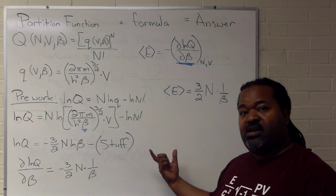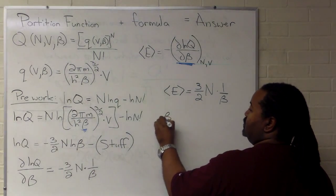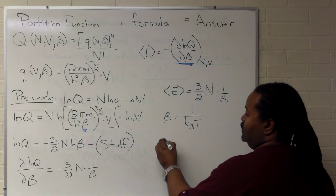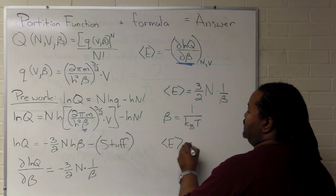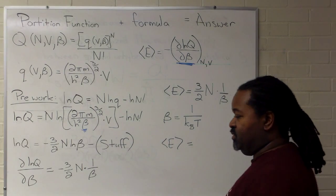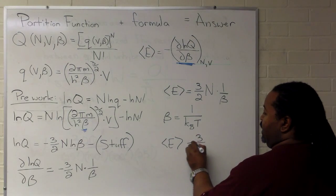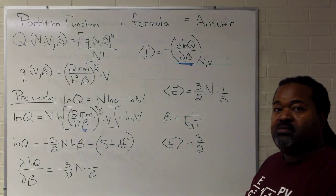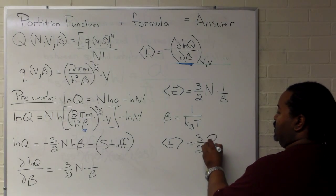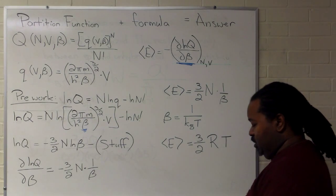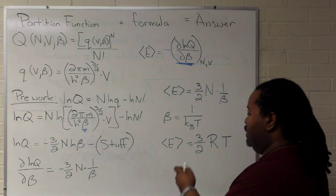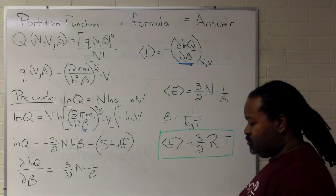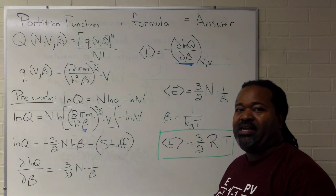Now as it turns out, beta itself can be replaced with a 1 over kT. And we have something that may be a more familiar result, because if we have 3 halves n kT, n times k will give us the gas constant. So this then becomes the final answer, and it's something that may be a bit more familiar from formulas for the ideal gas.